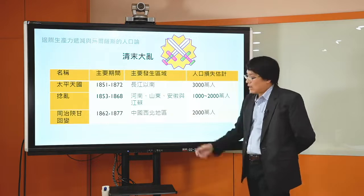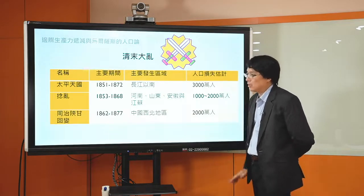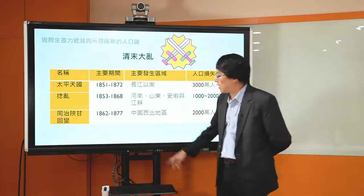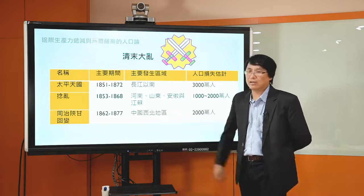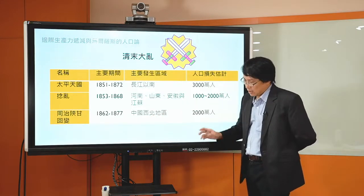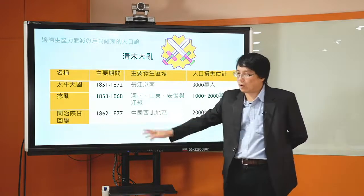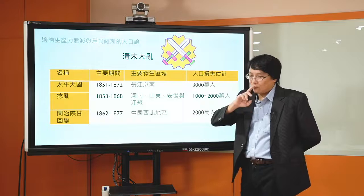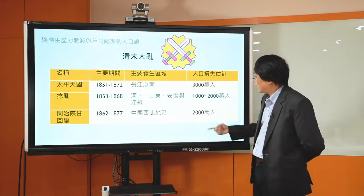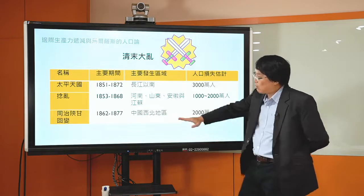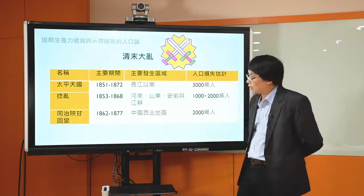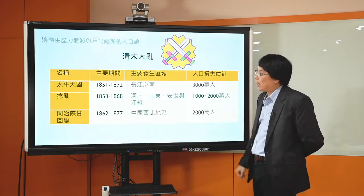第三场叫做同治陕甘回变，发生在中国西北地区，从1862年一直打到1877年，从陕西、甘肃一带开始，一直打到新疆。历史记载这场回变死伤非常惨重，通常都是回族穆斯林跟非穆斯林的村落互相对砍，砍的结果通常都是屠村，后来清朝军队开始来镇压。因为都是屠村式的对砍，估计人口损失2000万人。